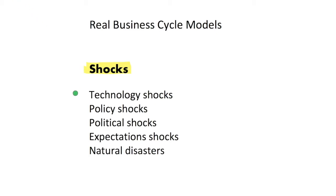We have some examples of what we might view as a shock. We could have shocks to technology, or policy shocks — for example, a government changes its fiscal policy and suddenly starts spending on something we weren't expecting. We could have monetary policy shocks where the monetary authority increases the money supply or changes interest rates. We could also have political shocks, which are slightly different to policy shocks — for example, changes in the incumbent political party or a referendum on leaving a certain union.